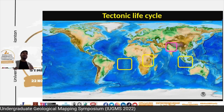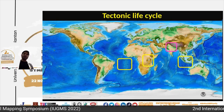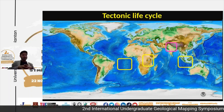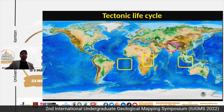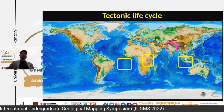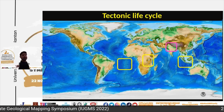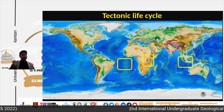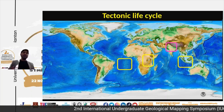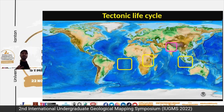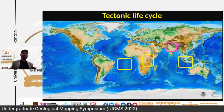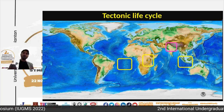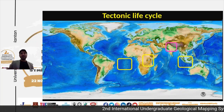If some students are working on a rift system like the African rift, you can make a map right now. Read the tectonic topography and create that map — it will guide you to do geological mapping much more efficiently than if you go to the field without knowing how to read tectonic topography. This is a really important thing.